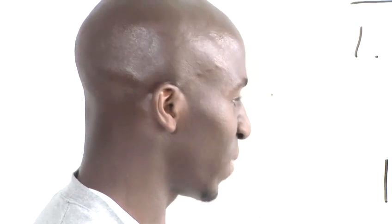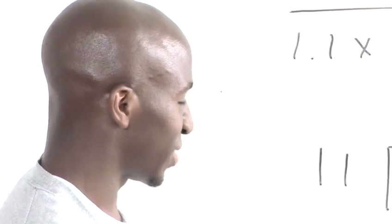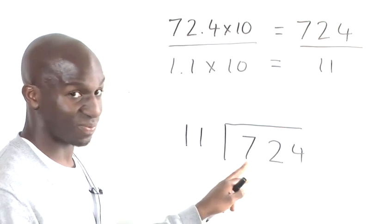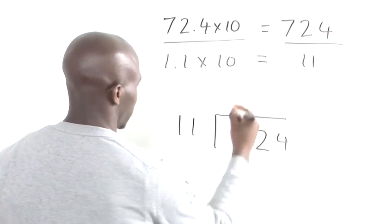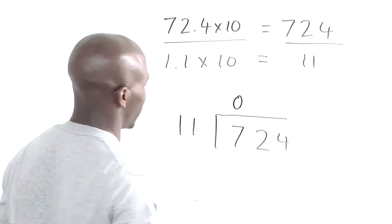Okay, so the first thing we need to do is to establish how many times 11 goes into 7, and it doesn't. So we put a 0 above there.